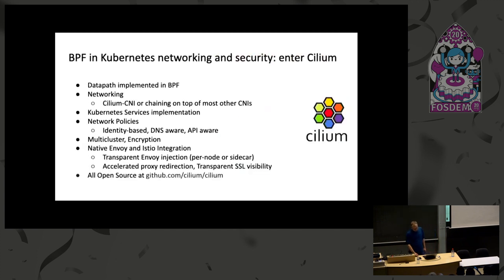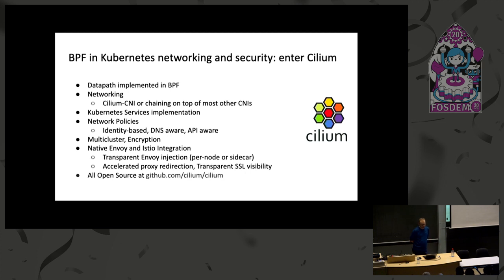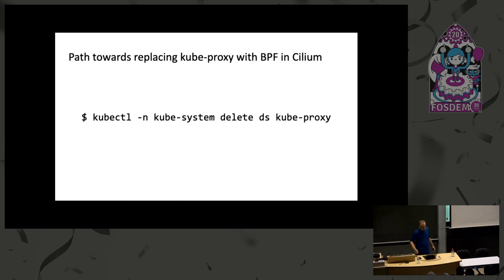So how does this link back to Kubernetes networking? There's Cilium, which is an open source CNI for Kubernetes that implements its full data path in BPF. It supports the Kubernetes service implementation — the focus of this talk — but there are also many other features: network policies, multi-cluster accessibility, encryption, and so on. How did we get to the path of replacing KubeProxy with BPF, where you can delete the KubeProxy daemon set and no longer need your long list of IPTables rules?